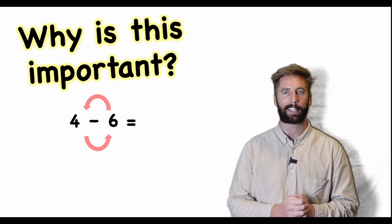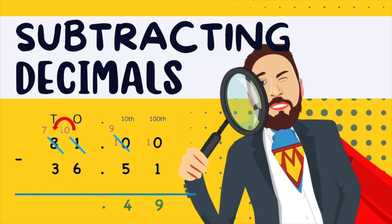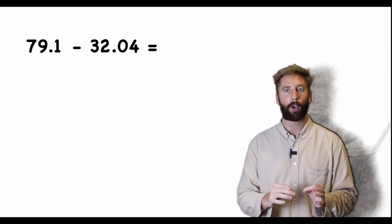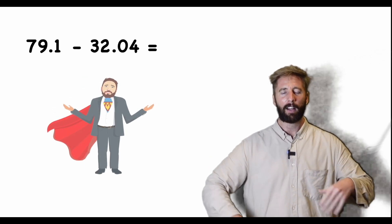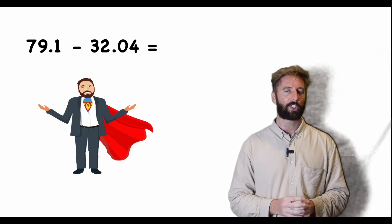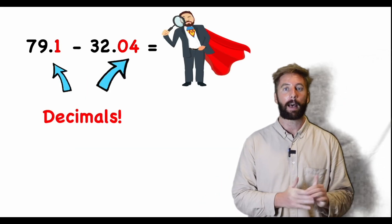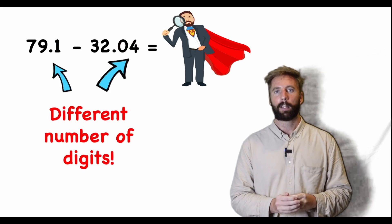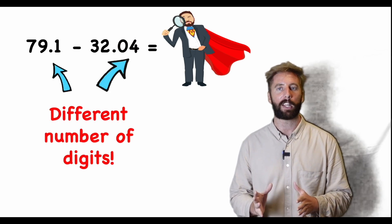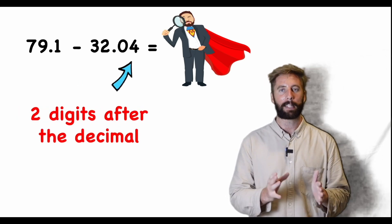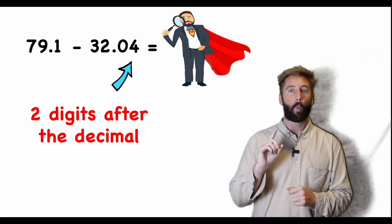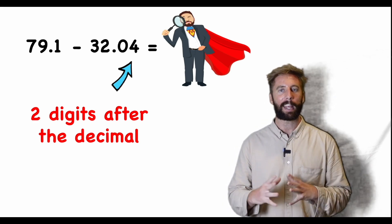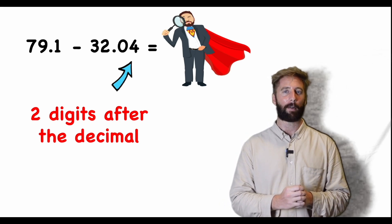What if I gave you 79.1 subtract 32.04? Lots of things to look at in this question. The first thing I notice is we now have decimals, which means I'm going to have to add some extra columns and make sure I put things in the right place. The second thing I notice is I have different numbers of digits after the decimal — one digit in 79.1 but two digits after the decimal in 32.04. I've got to be really careful here.